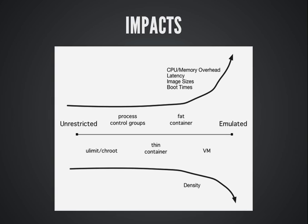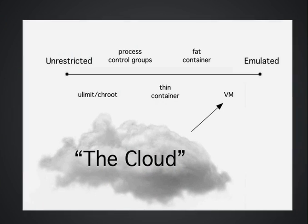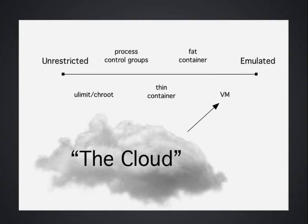And your density starts to go down pretty significantly. Most of what we think of as the cloud — at least infrastructure as a service, like EC2 or Rackspace cloud — these tend to be run on VMs, whether it's Xen, KVM, or a VMware solution. We're running full servers emulated in a virtual machine.